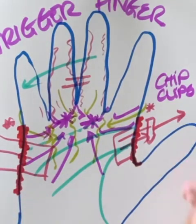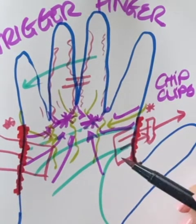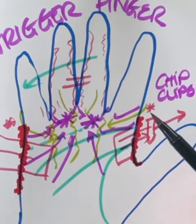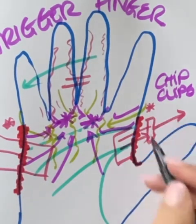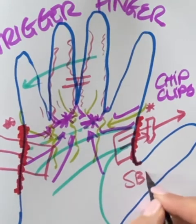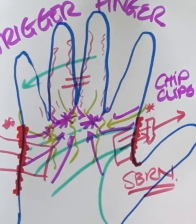Anyway, that's my thought on the chip clips and what I do. It's not the only thing I do, but this gives me some good information. Again, if I only put it on one side, then I know that SBRN is a bit more of a guy to look at.